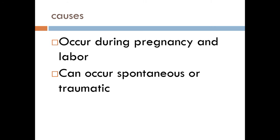Traumatic causes of rupture during pregnancy include direct trauma to the abdominal wall and external cephalic version for correction of breech delivery. Spontaneous rupture during labor can be due to the same factors common in multiparous women, obstructed labor, previous caesarean scar, abruptio placentae, and misuse of oxytocin. Traumatic causes during labor include instrumental delivery, breech extraction before full dilatation of the cervix, and internal podalic version.